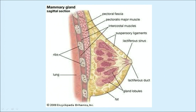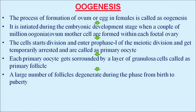Oogenesis is the process of formation of ovum or egg in females. It is initiated during the embryonic development stage when a couple of million oogonia, also called ovum mother cells, are formed within each fetal ovary. These cells start division and enter prophase I of meiotic division and get temporarily arrested, and are called primary oocytes. Each primary oocyte gets surrounded by a layer of granulosa cells, forming a primary follicle.